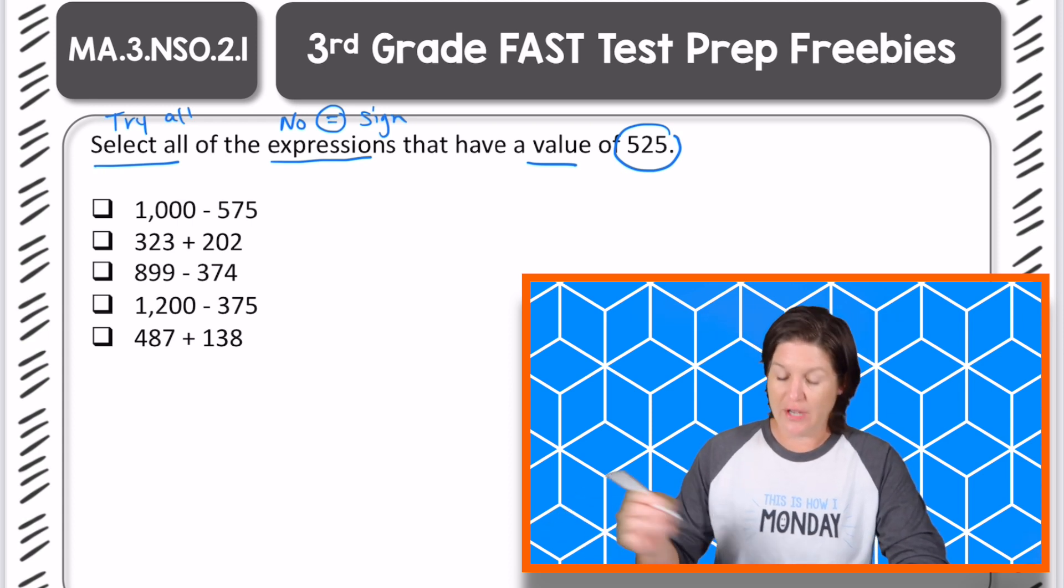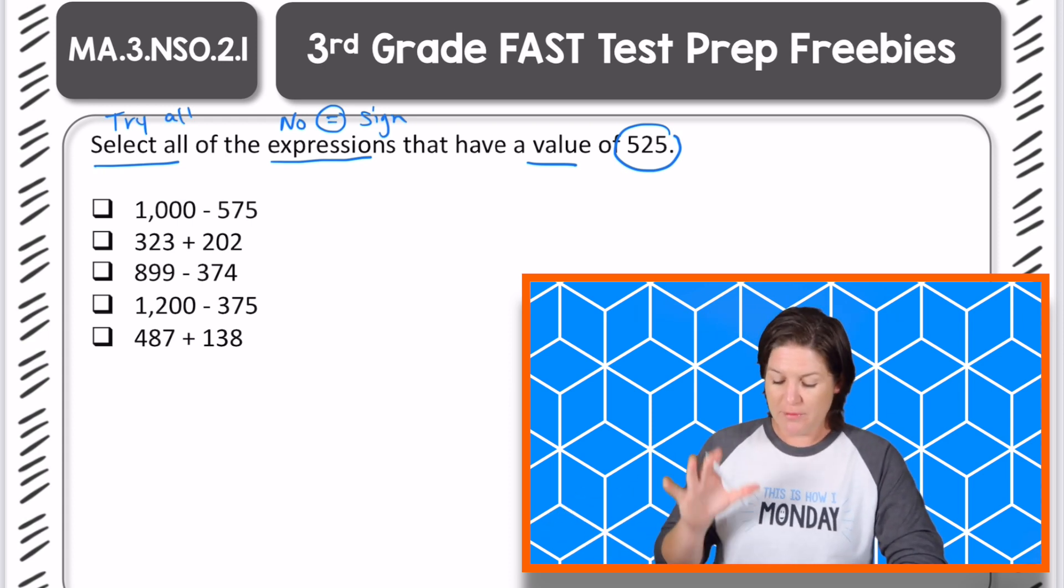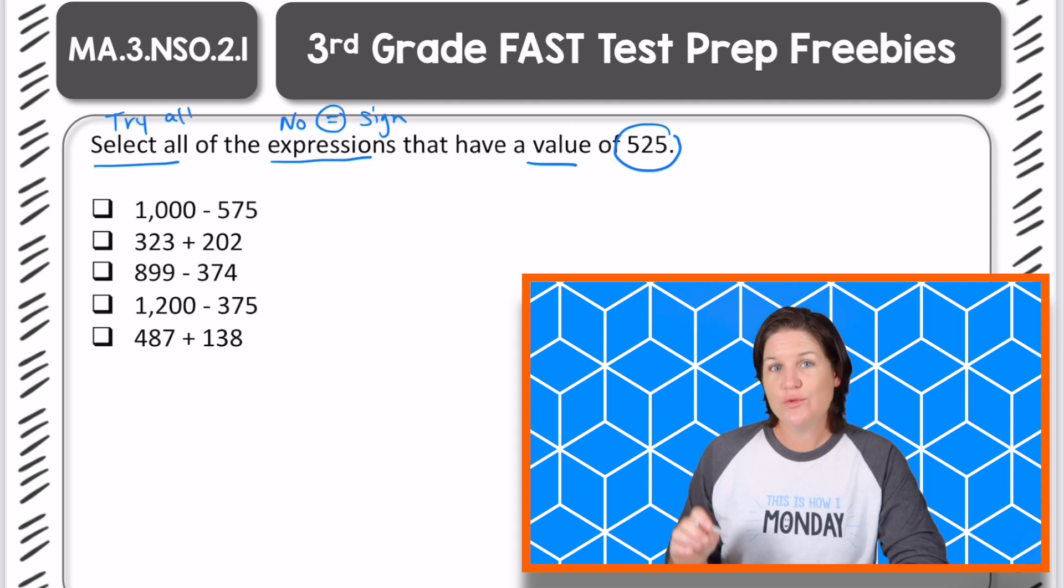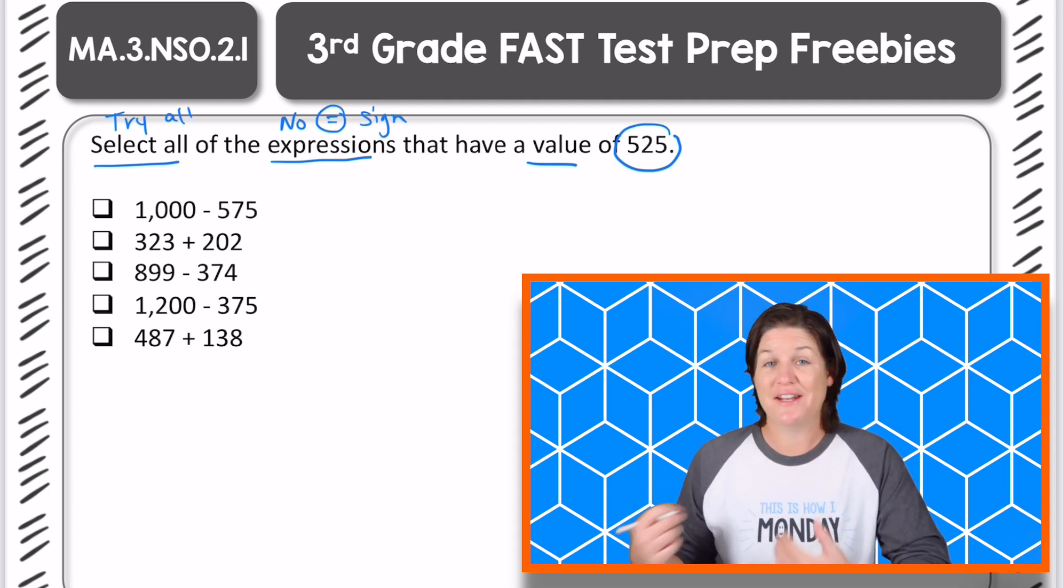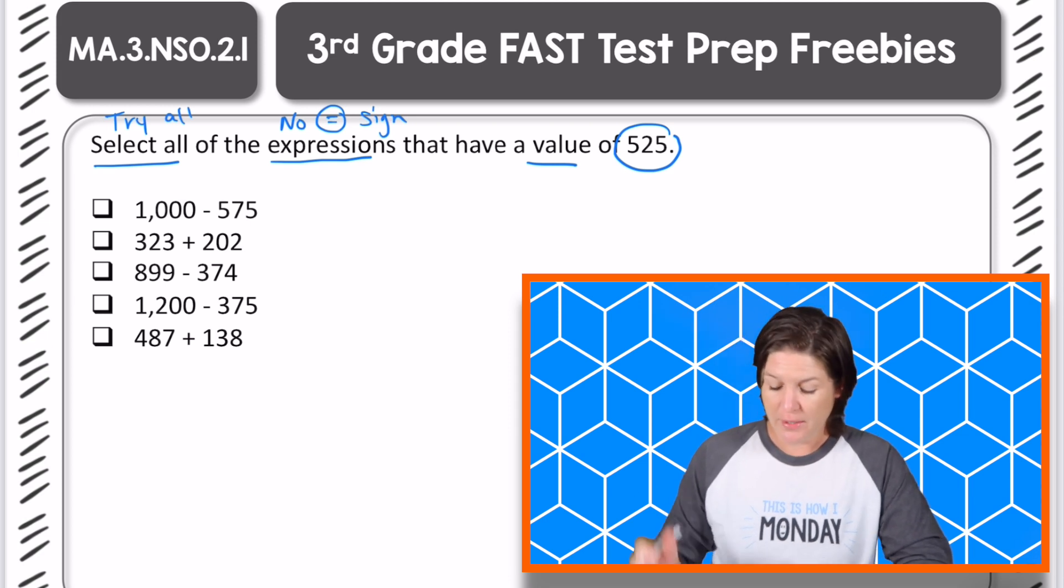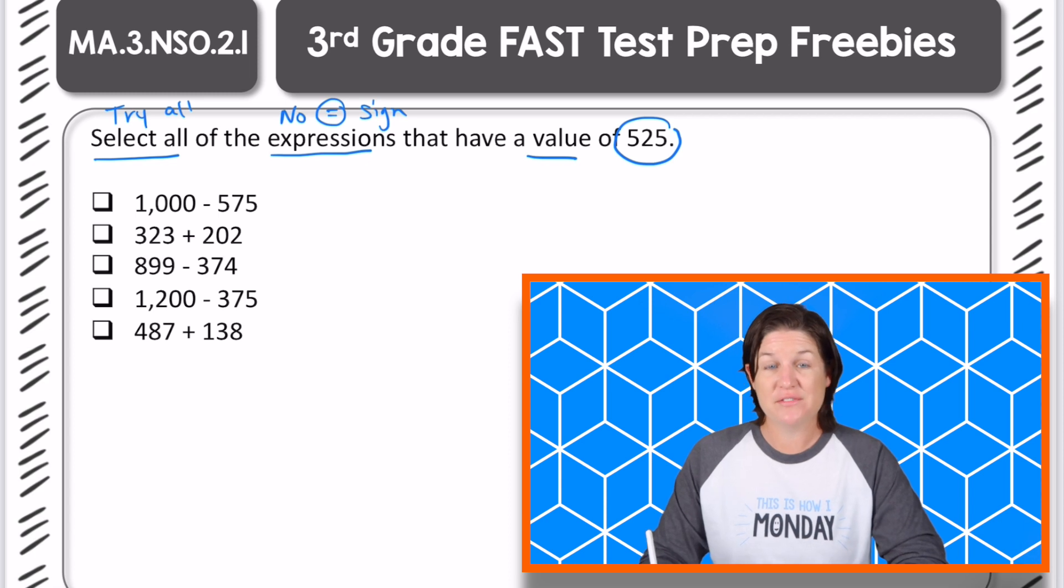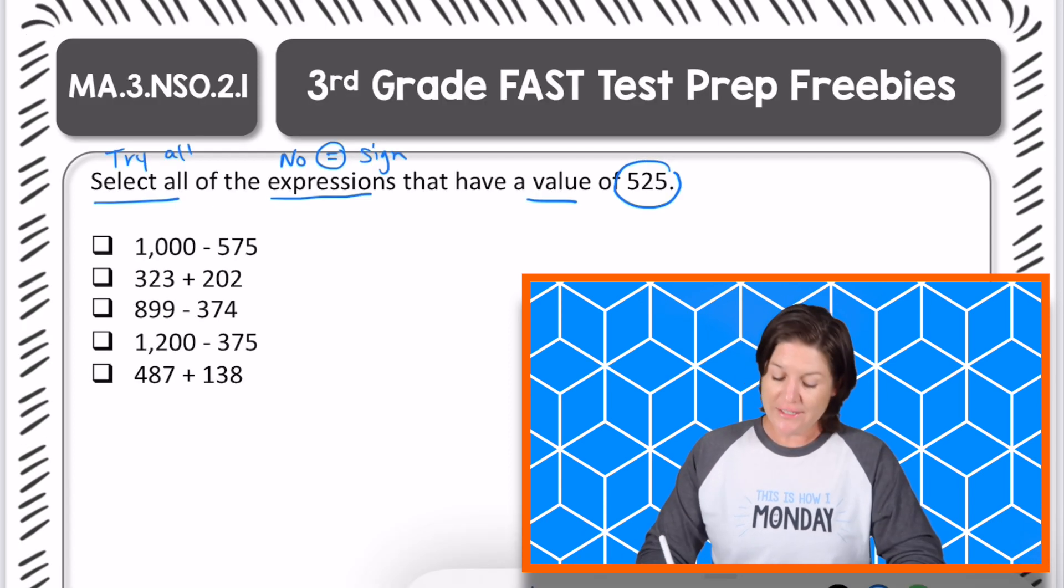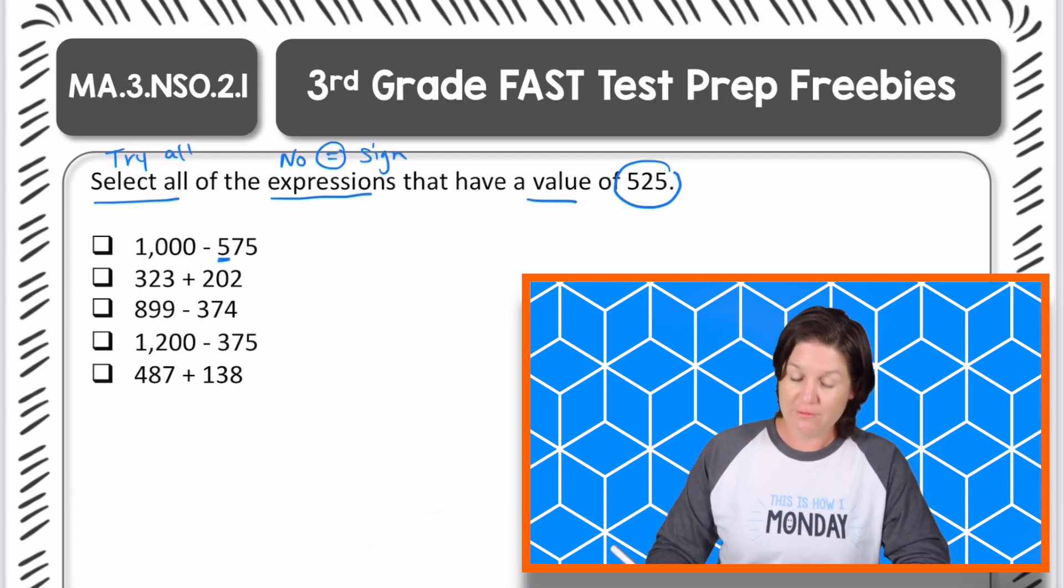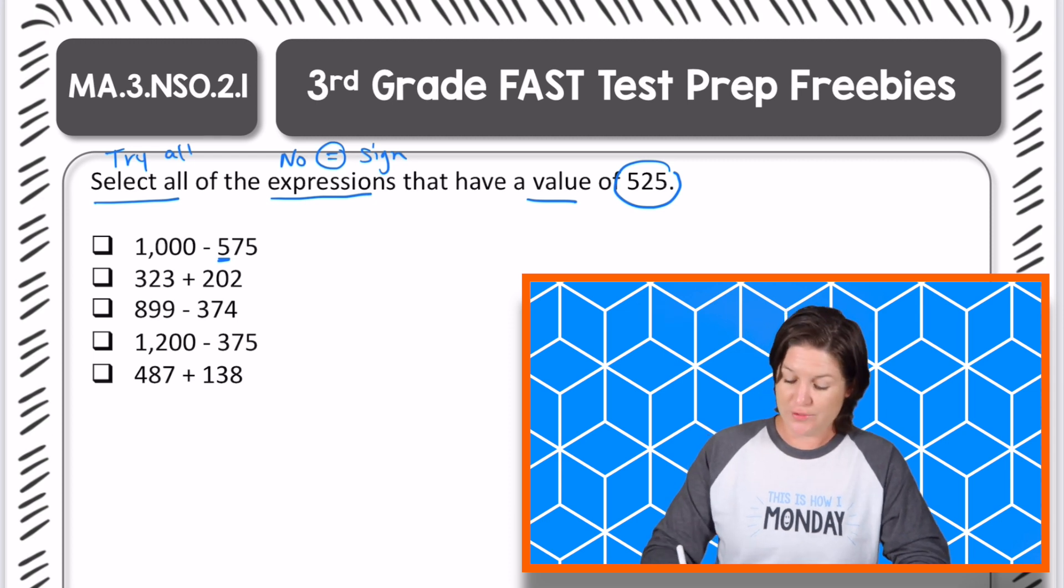All right, welcome back. Let's go ahead and solve it. Now, actually, I have to preface this. Before I solve, I'm going to use mental math. By using mental math, I might get to determine that I don't even need to go into solving it. Let's go ahead and start with the first one. We've got 1,000 minus 575. Well, I know that 1,000 minus 500 equals 500.